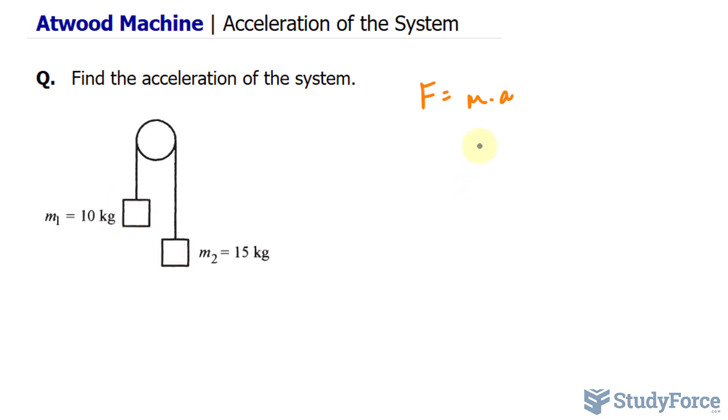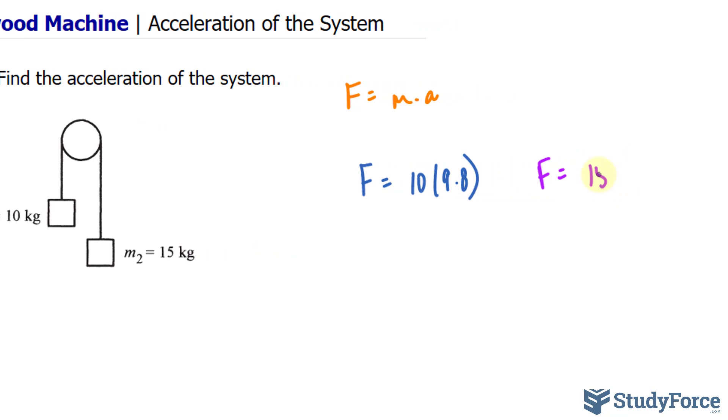So starting with mass one, we have the force is equal to the mass of 10 times the acceleration of 9.8, and the other formula will be the exact same thing. The force is equal to 15 times 9.8.